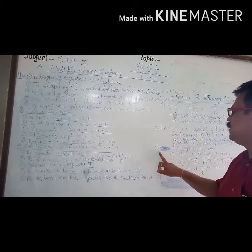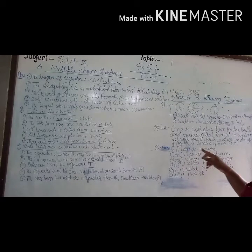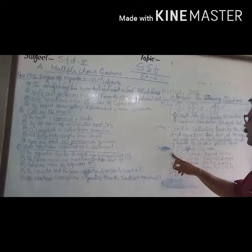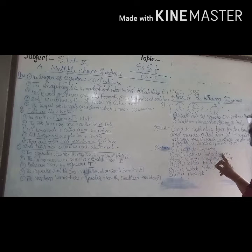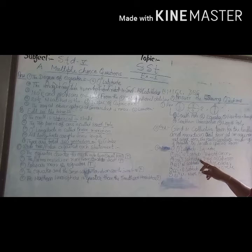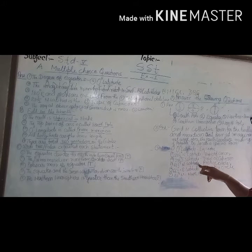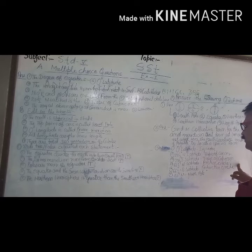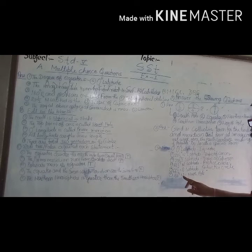Now — Name the Following. You have to write the name only. Number 1: 0 degree latitude — answer: Equator. Number 2: 23 and a half degree north latitude — answer: Tropic of Cancer. Number 3: 23 and a half degree south latitude — answer: Tropic of Capricorn. Number 4: 66 and a half degree north latitude — answer: Arctic Circle.